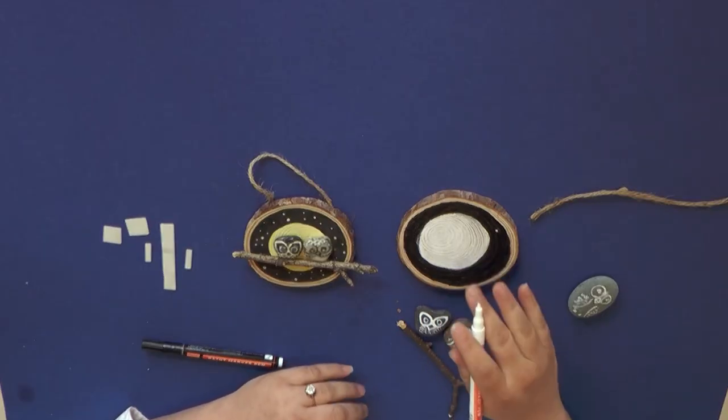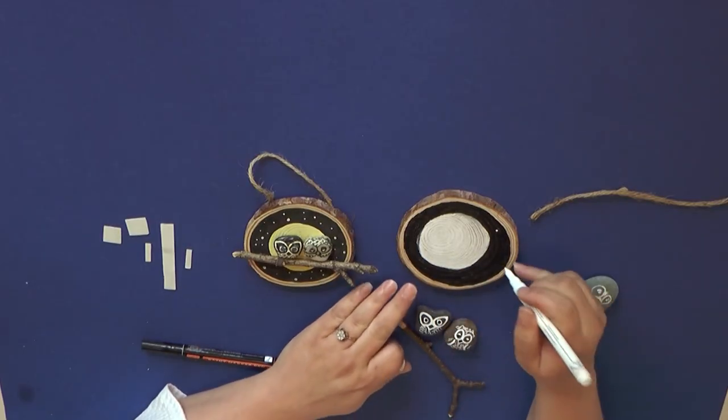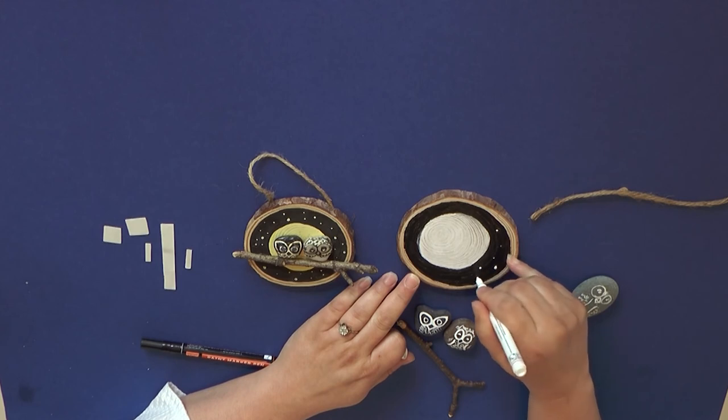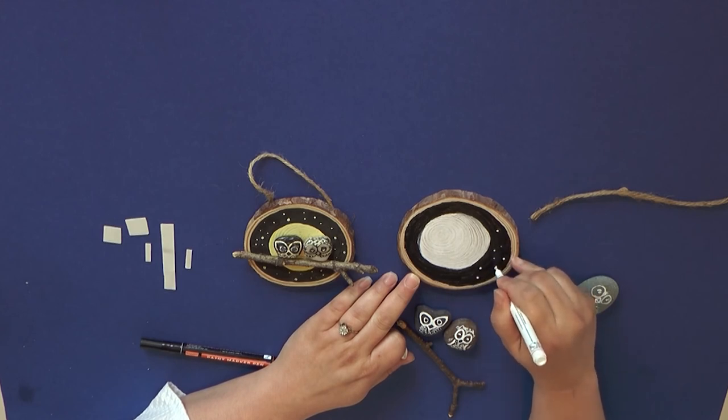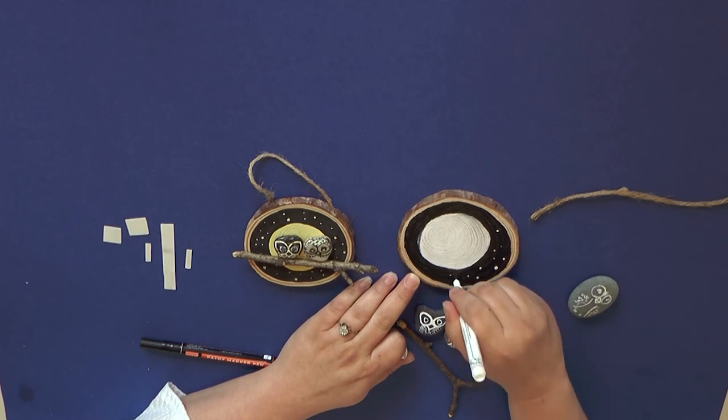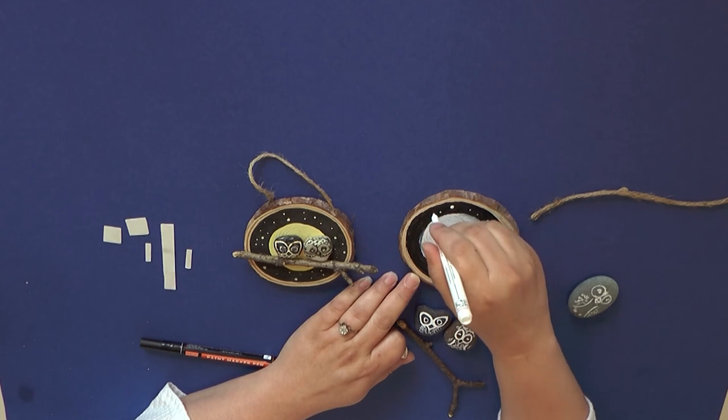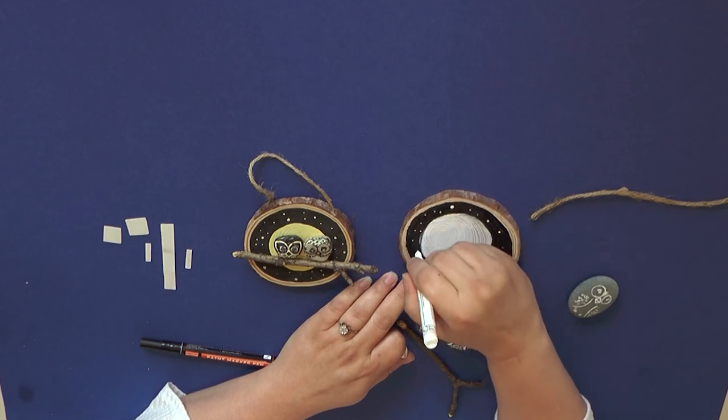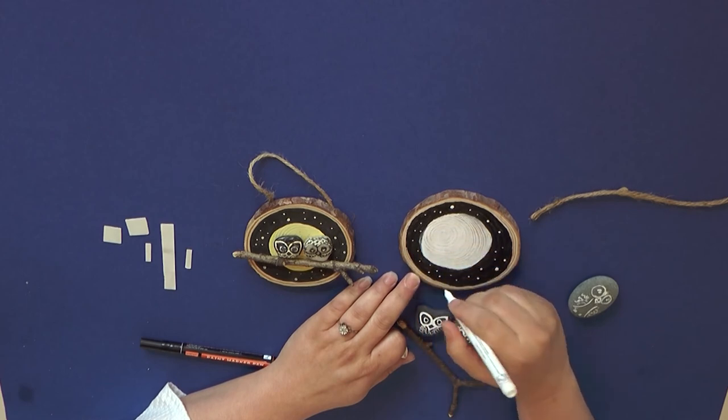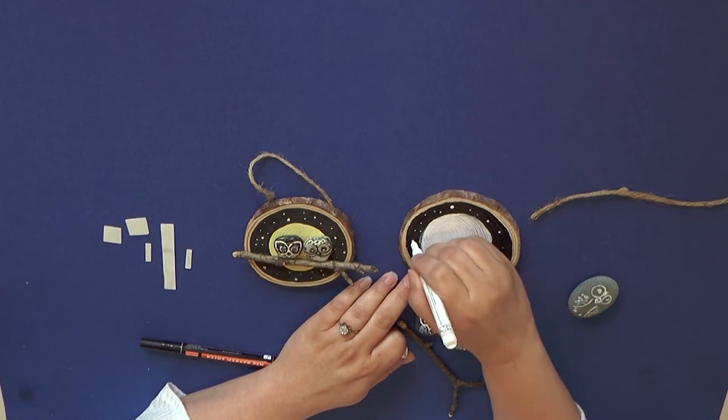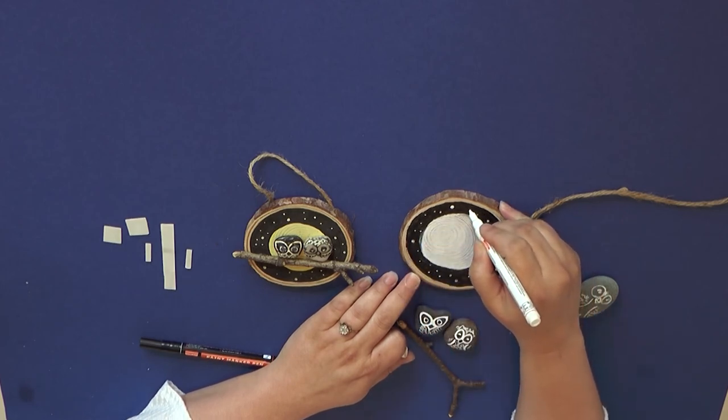Alright so after you get your second coat of paint onto your wood slice you can go ahead and put your stars in randomly throughout the sky. And I like to make some small and some a little bit thicker. Alright I think that looks pretty good.